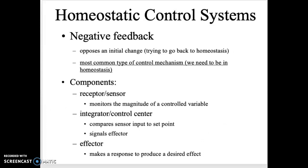Feedback is separated into two ways. Negative feedback opposes the change — we're trying to get back to homeostasis — and this is the most common because the goal is to return to that neutral set point. There are three components: a receptor or sensor that measures the magnitude of change; an integrator or control center that compares the sensor's information to the set point; and effector organs that carry out the actual response. For example, if body temperature is 99.6°F, the integrator compares that to the set point of 98.6°F and triggers the effector — in this case your sweat glands — so you start sweating.